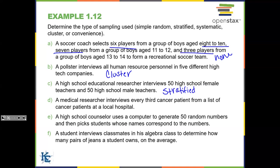D: a medical researcher interviews every third cancer patient from a list at a local hospital — 'every third' signals systematic sampling. E: a high school counselor uses a computer to generate 50 random numbers and picks students whose names correspond to those numbers — this is simple random sampling, because a computer generates the numbers randomly. F: a student interviews classmates in his algebra class to determine how many pairs of jeans a student owns on average — this is convenience sampling, because he is simply talking to his classmates.